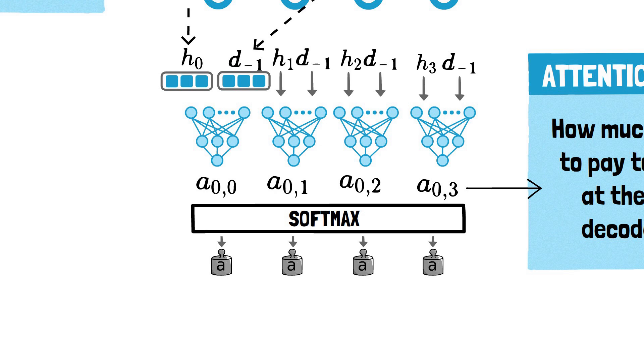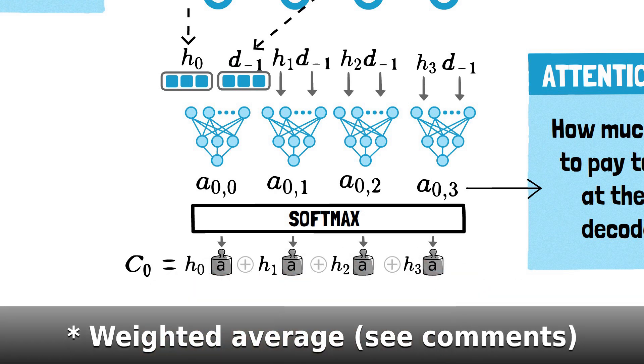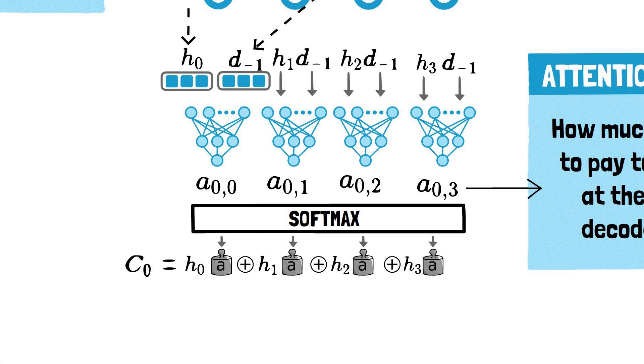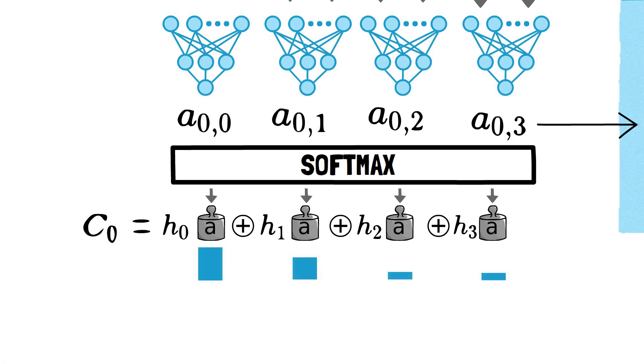The decoder can therefore now compute the context for the current word being translated by doing a weighted sum of all encoder states with the attention scores. Signals from input words with higher attention scores will be more prevalently represented in the context, allowing the decoder to focus more on these words.